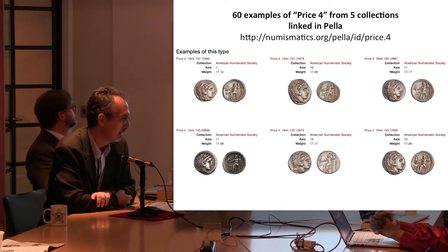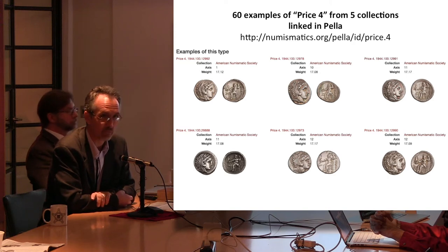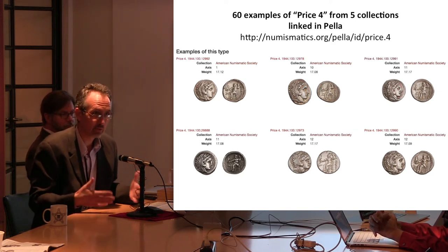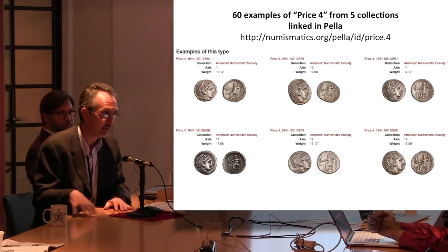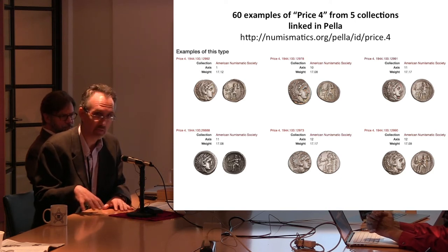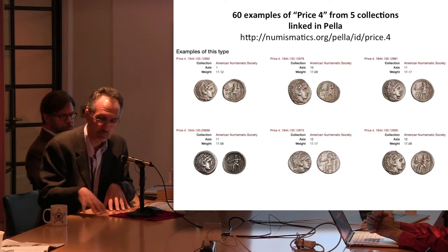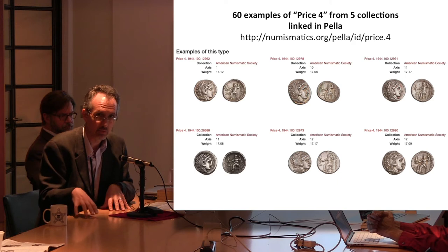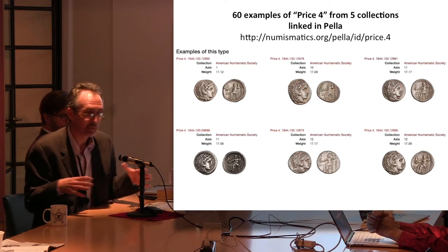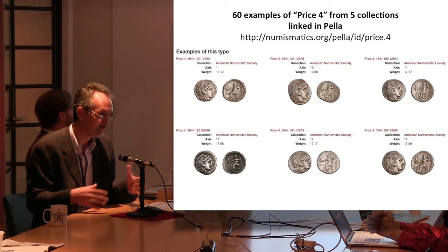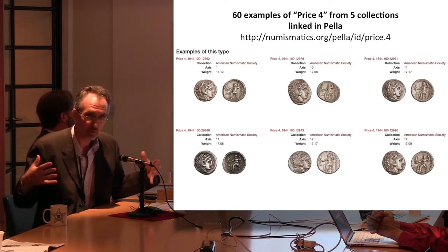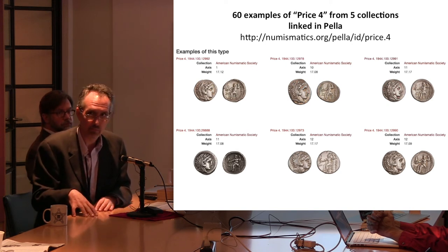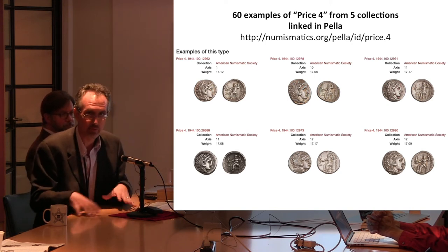There are currently about 60 examples of Price 4 from five different collections worldwide. If you are a numismatic researcher, this creates a wonderful opportunity to see material from a number of different collections with just a few clicks of a button, rather than having to scroll through the internet trying to find this material individually. The goal ultimately is to try to get as many collections linked up as possible — including ultimately coin archives and other repositories of this type of information. When you go to a typological page, you'll be able to see dozens, if not hundreds, of examples of that type.